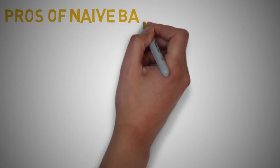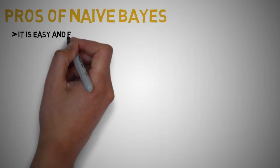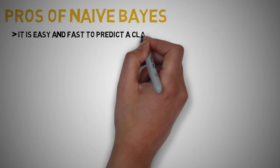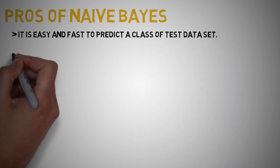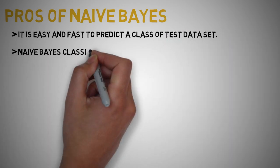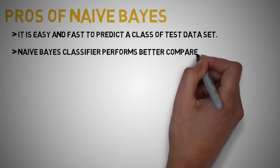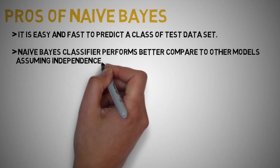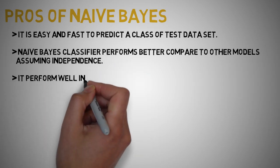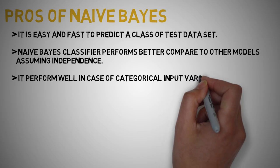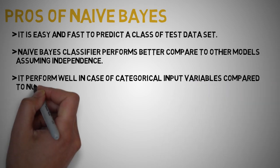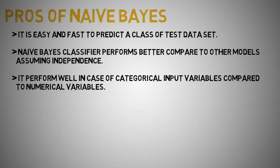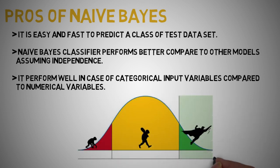Looking at the pros and cons of Naive Bayes: it is easy and fast to predict a class of a test dataset. It also performs well in multi-class predictions. When the assumption of independence holds, a Naive Bayes classifier performs better compared to other models like logistic regression, and you need less training data. It performs well in the case of categorical input variables compared to numerical variables. For numerical variables, normal distribution is assumed — a bell curve — which is a strong assumption.